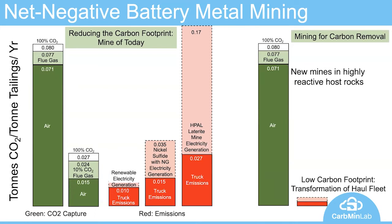On the far right, I show where we're going into the future. I think we will be driving the mining of metals like nickel that are essential for electrification of transportation away from deposit types like laterites — which inherently have a high carbon footprint — towards the sulfide type deposits, which have an inherently lower carbon footprint. Once we move to renewable energy and transform the haul fleet away from fossil fuel combustion, and if we also combine that with prospecting for highly reactive mine tailings materials, we have the potential to create significant capacity to not only completely offset the emissions of mining, but also generate net-negative mining and carbon removal from the atmosphere in the same industrial processes we're using to generate the nickel we need for batteries.